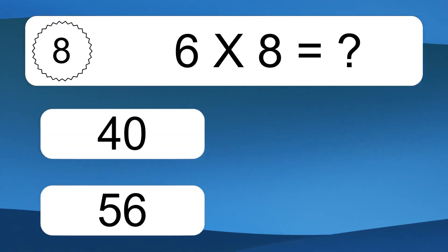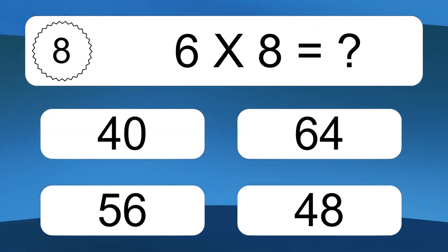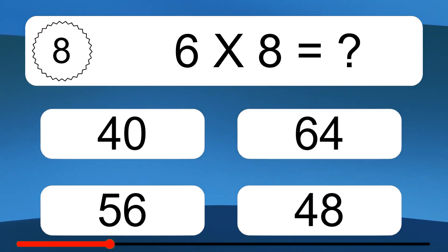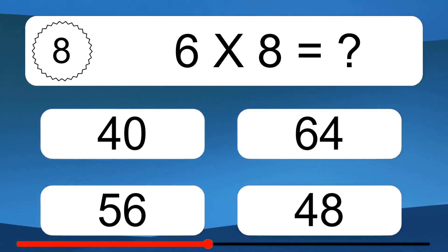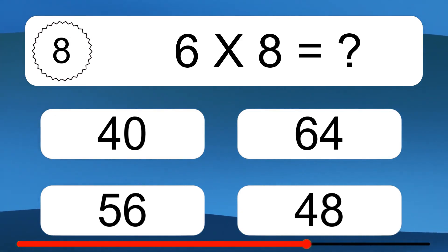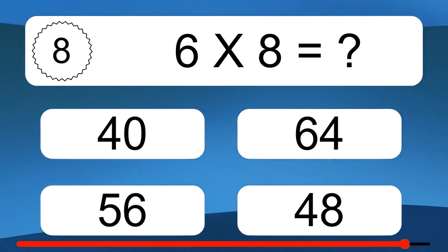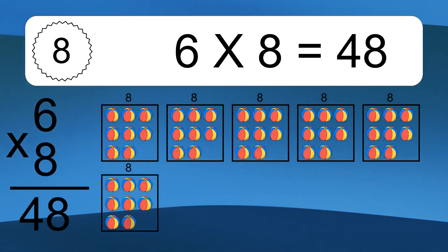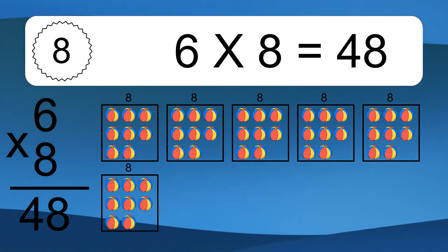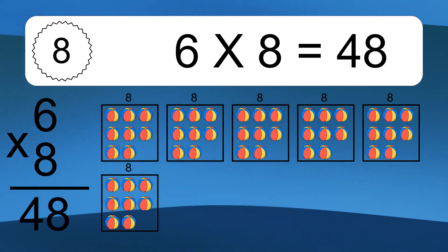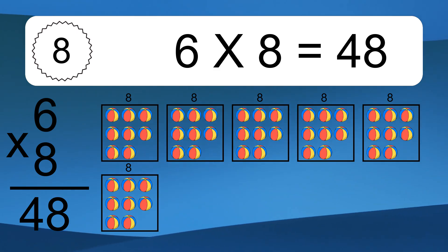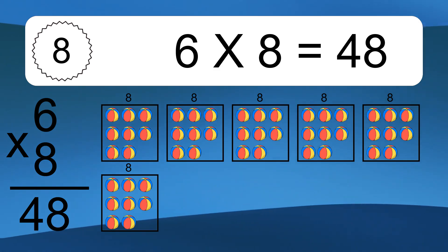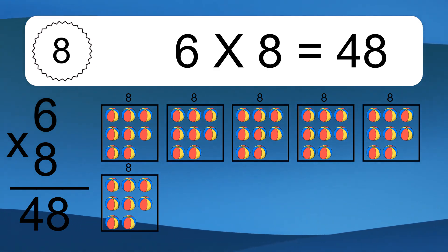6 times 8 equals what? 6 times 8 equals 48. We have 6 boxes, and each box has 8 colorful balls inside. If you count all the balls in all the boxes together, you will have 6 times 8 balls. This equals 48 balls.